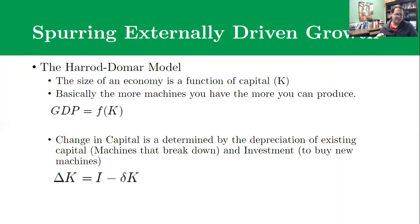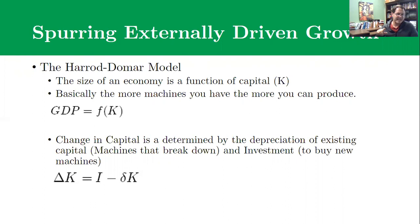K is used for capital because in German, capital starts with a K — Marx wrote a book called Das Kapital. So the equation is: change in capital (ΔK) equals investment (I) minus the depreciation coefficient (δ), the lowercase Greek letter delta, which represents the breakdown or wear of machines over time.